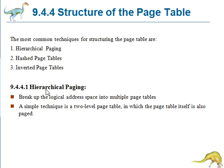Assuming that each entry consists of 4 bytes, each process may need up to 4 MB of physical address space for the page table alone. Clearly, we would not want to allocate the page table continuously in main memory. So one simple solution to this problem is to divide the page table into smaller pieces.